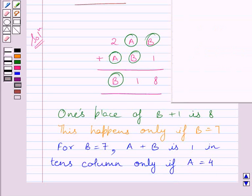Now if we substitute 4 for A and 7 for B in this given puzzle, we get 247 plus 471 gives 718.